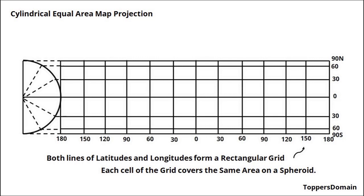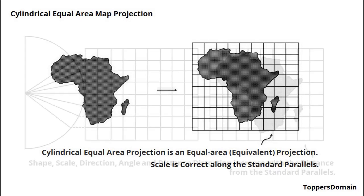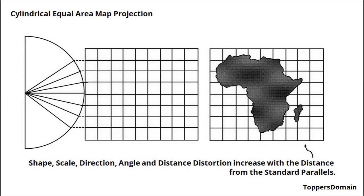Like any map projection, the Cylindrical Equal Area Projection is not without its distortions. It's essential to be aware of these limitations when using this projection for specific purposes. The projection maintains equal area, meaning that the size of each cell on the grid represents the same area on a spheroid. However, as we move away from the standard parallels — the lines of latitude where the scale is correct — various distortions start to emerge. Distortions that can be observed include shape, scale, direction, angle, and distance distortions. These distortions increase as one moves farther away from the standard parallels.